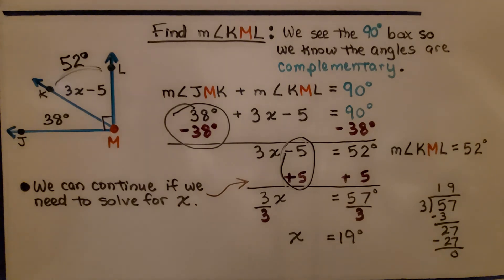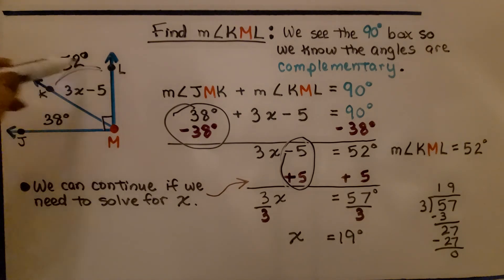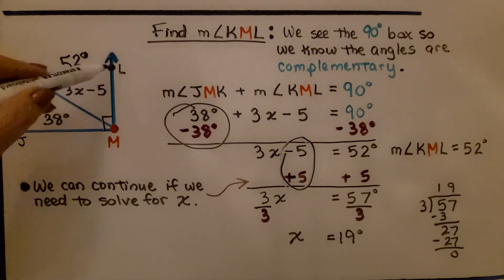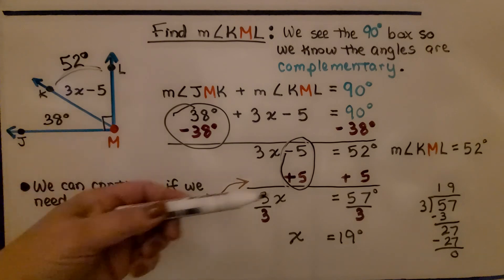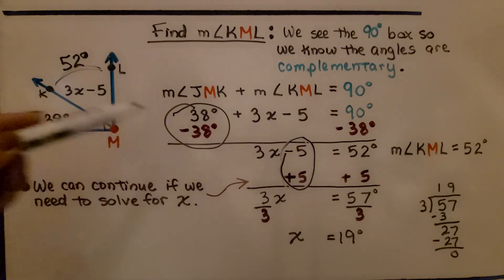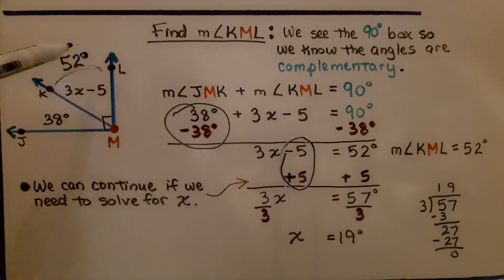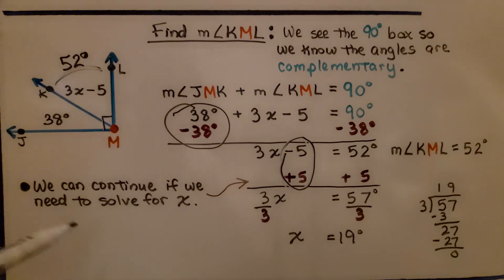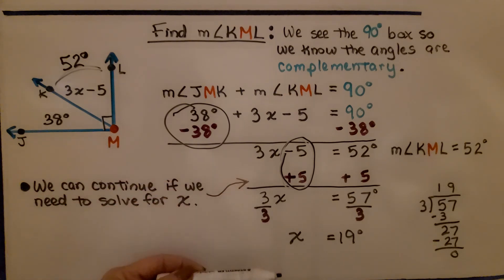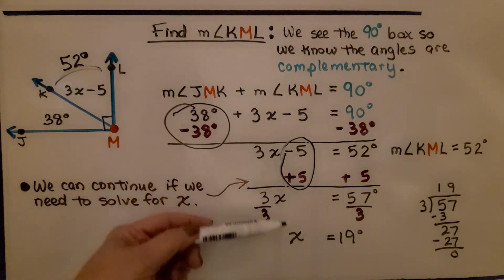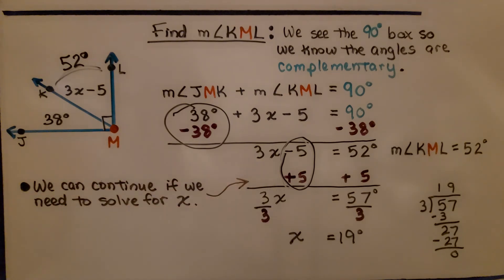Keep in mind: when you just need to know how many degrees an angle measure is, you can stop as soon as you identify it — for example, when 3x minus 5 equals 52 degrees, you know it's 52 degrees. If the problem says to solve for x, that's different — you need to continue using inverse operations to isolate x.